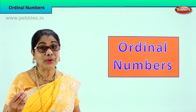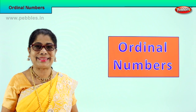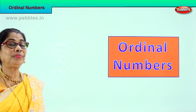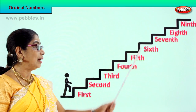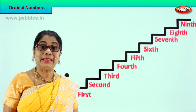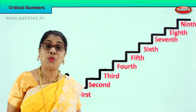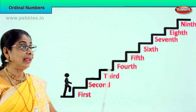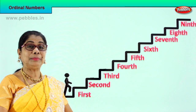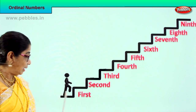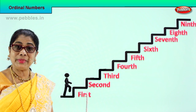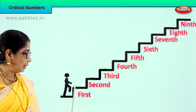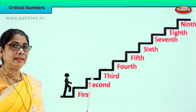We must also learn the spellings. What is the meaning of ordinal numbers? Suppose you are climbing, you are going up the stairs. You will say I am on the first step, second step. Here is a little boy climbing up. First, second, third, fourth.